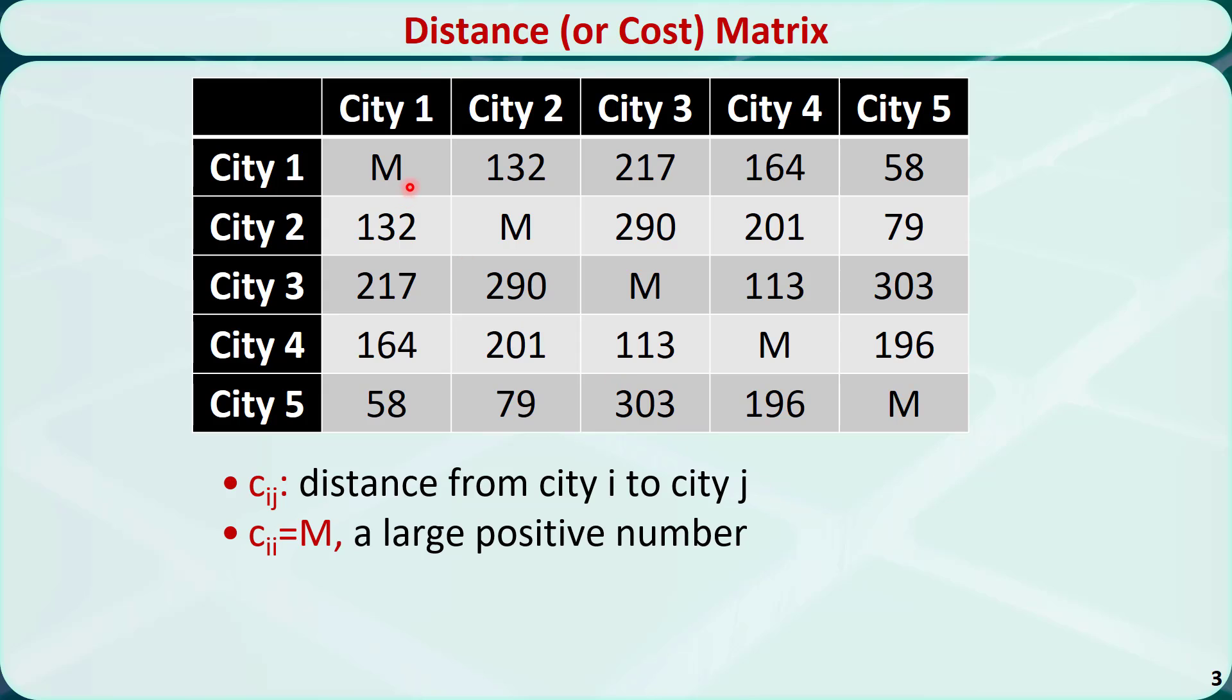From city 1 to city 1, the distance C11 is equal to 0. However, we don't want to make unnecessary travels from one city directly to itself because we may get trapped in this city forever when we are trying to solve this problem. So, we assign a large positive number M, which represents a large penalty to this element in the distance matrix.